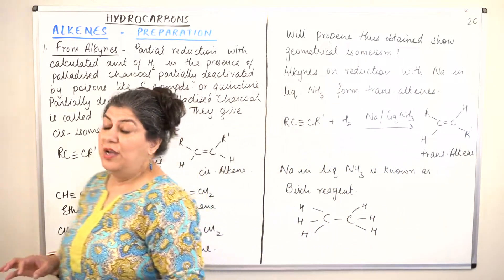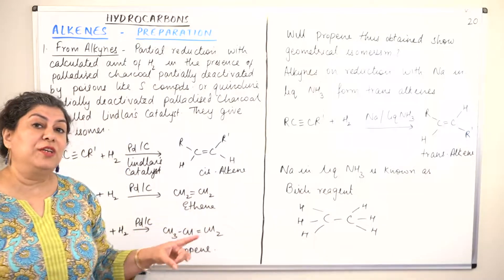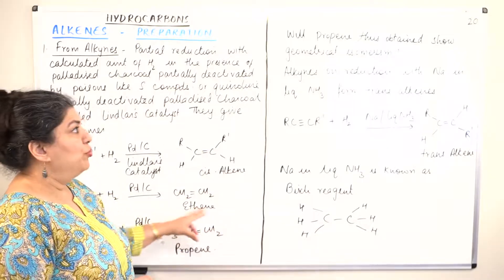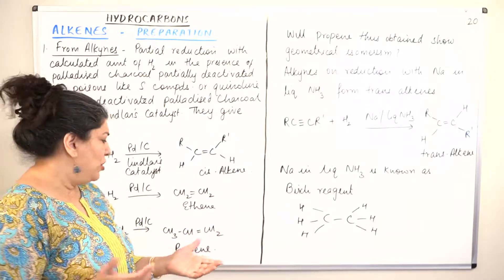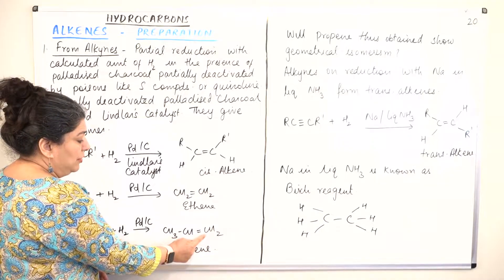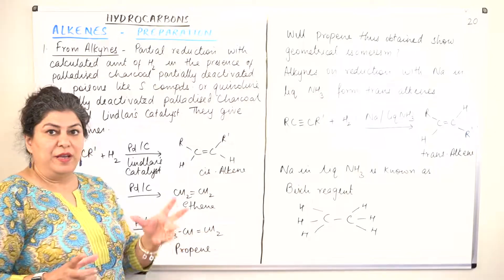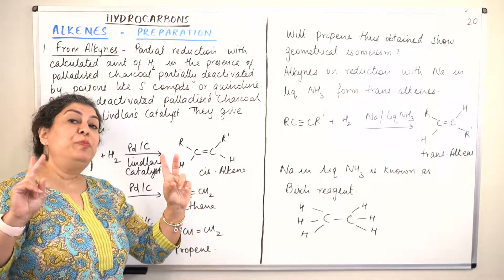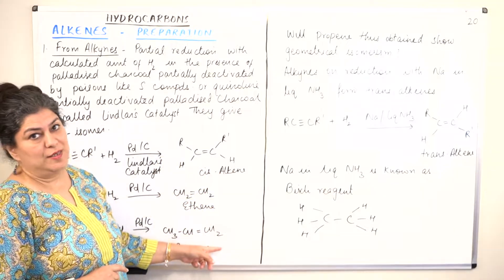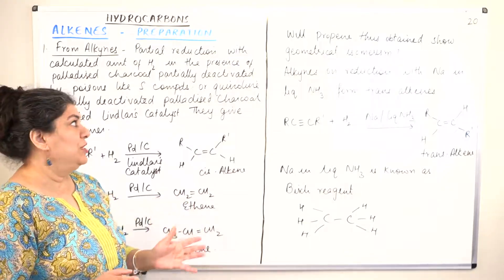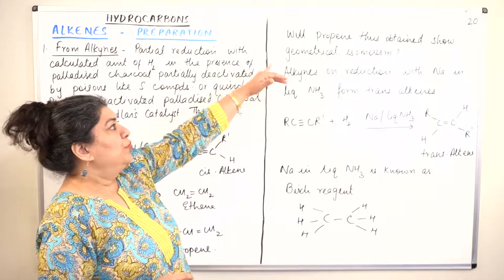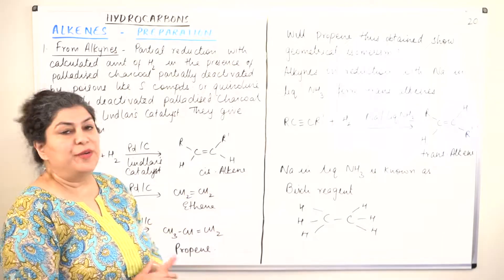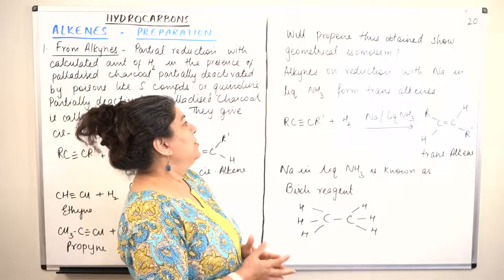It is really important to remember that when you are using Lindlar's catalyst, the product you get is a cis isomer. The propene thus obtained — will it show geometrical isomerism? Of course not, because for geometrical isomerism the two groups attached to each carbon of the carbon-carbon double bond must be different. If they are similar groups, cis-trans isomerism or geometrical isomerism does not occur.